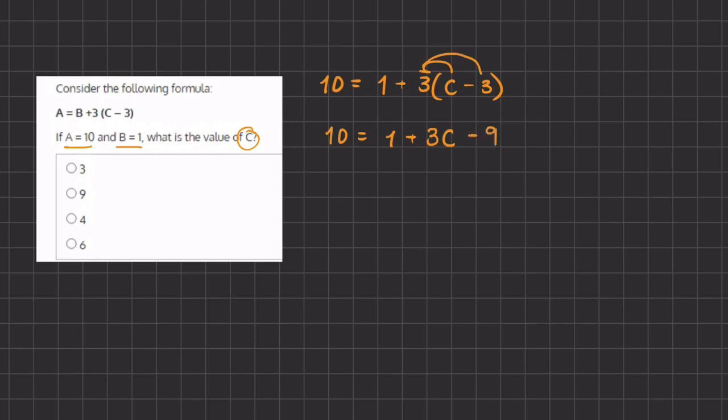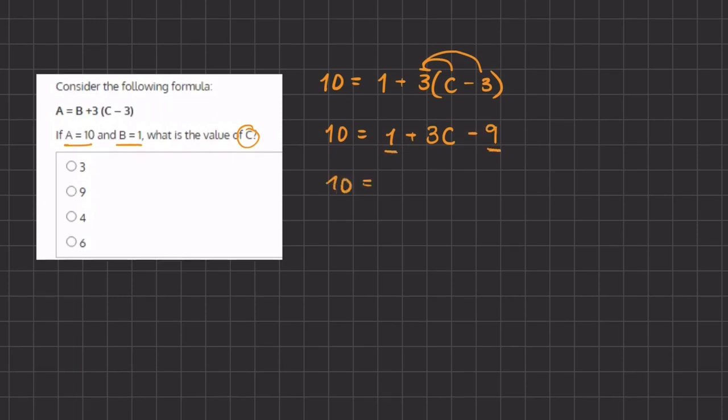All right, so now we can combine like terms. We have 1 and negative 9, so we have 10 equals 1 minus 9 which gives us negative 8 plus 3c.